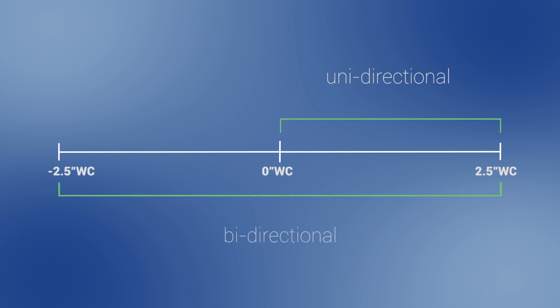A bidirectional pressure range starts at a negative pressure and goes to some positive pressure, like negative 2.5 inches of water column to positive 2.5 inches of water column, or plus or minus 2.5.